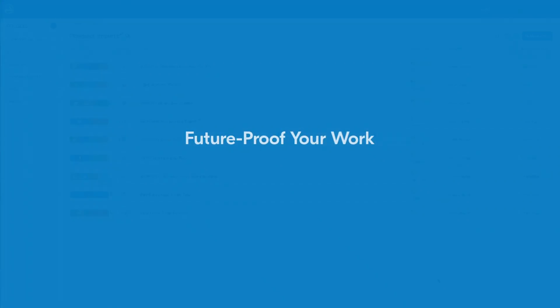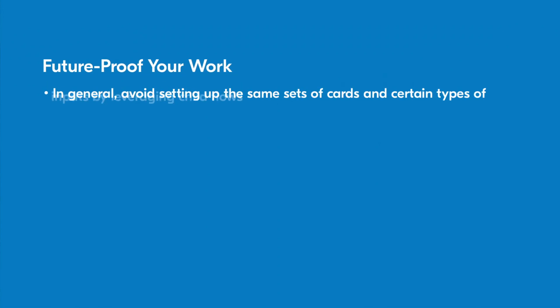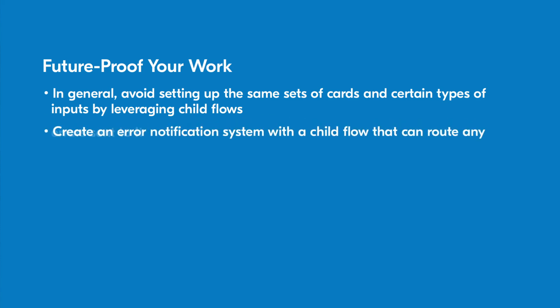By future-proofing your work, you can save yourself a lot of time down the road. Overall, you want to focus on minimizing how often you set up the same set of cards and certain types of inputs. Naturally, you can leverage child flows to minimize repetition. If you're managing a large ecosystem of flows, you may find a lot of value in creating an error notification system that routes certain kinds of messages to a single location.